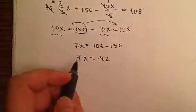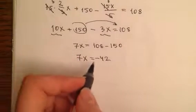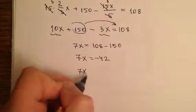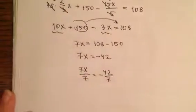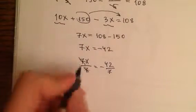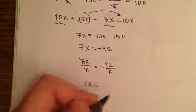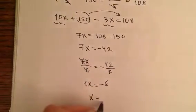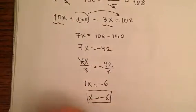Now I need to find x and to get rid of seven. To get rid of seven, I divide both sides by seven. So seven divided by seven is just one. x equals minus forty-two divided by seven, which is minus six. So we have found x, x equals minus six.